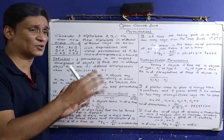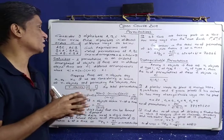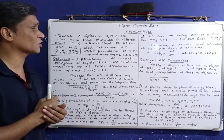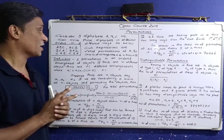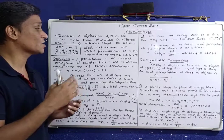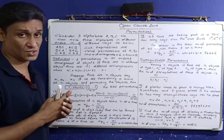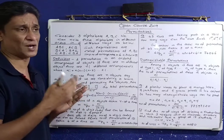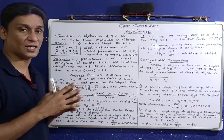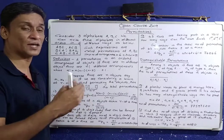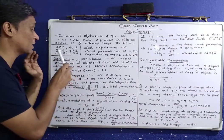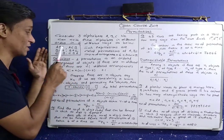We can do it mathematically. The definition is: consider three alphabets A, B, C. We can write these three alphabets in different orders — in six different ways.